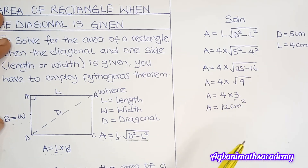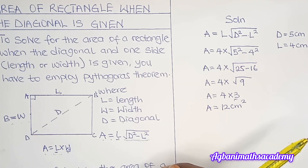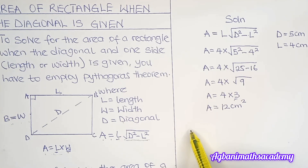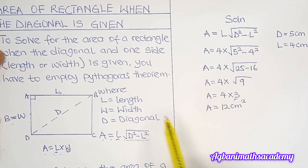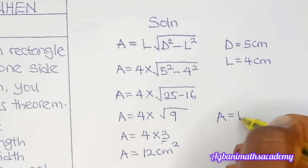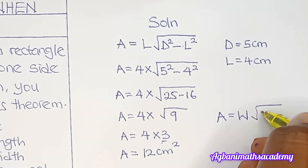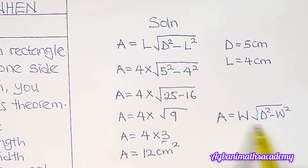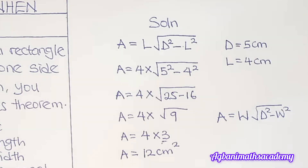In an exam, if you are given the length and the diagonal but not the breadth, apply the formula A = l × √(d² − l²). This formula is also valid in reverse: if you are given the diagonal and the width but not the length, the formula changes to A = w × √(d² − w²). That is the only difference.